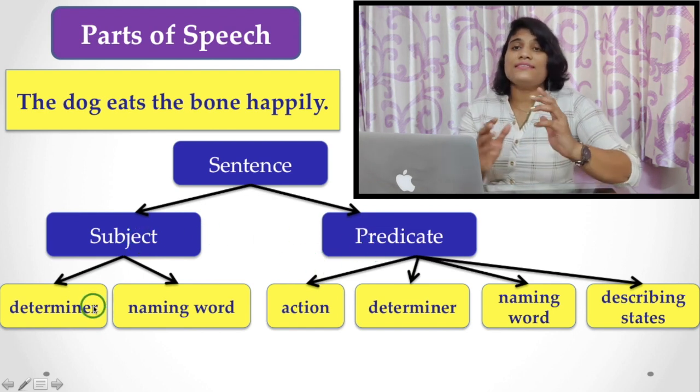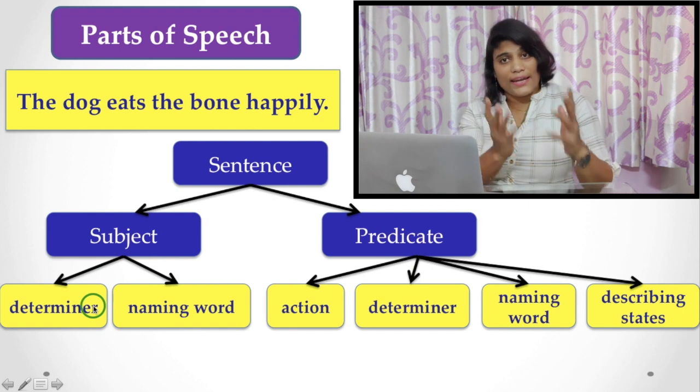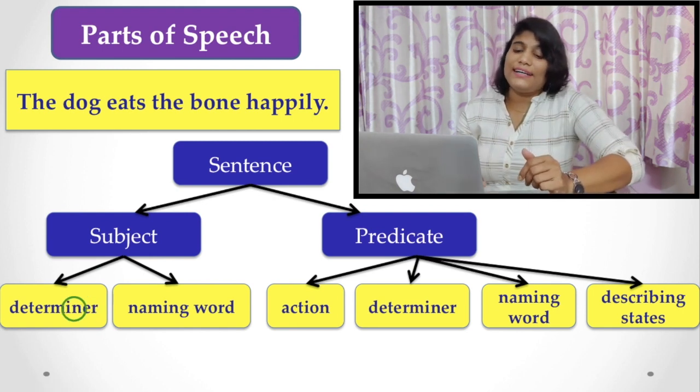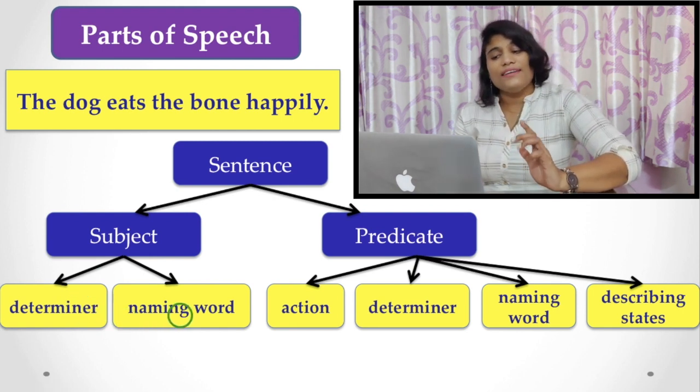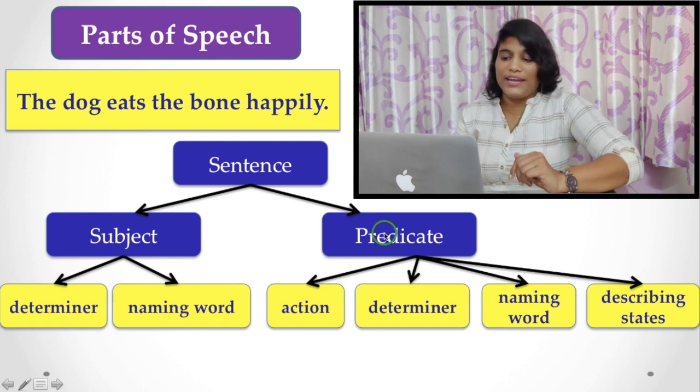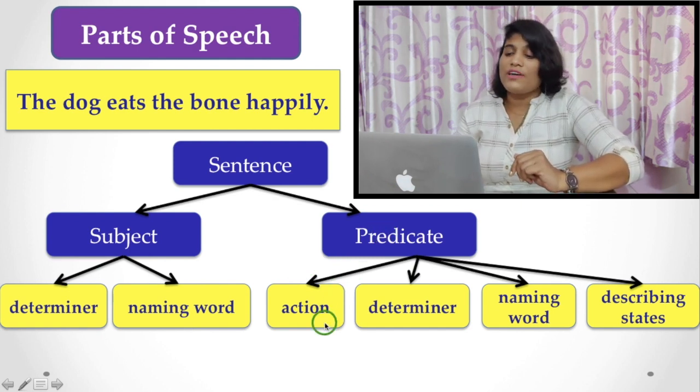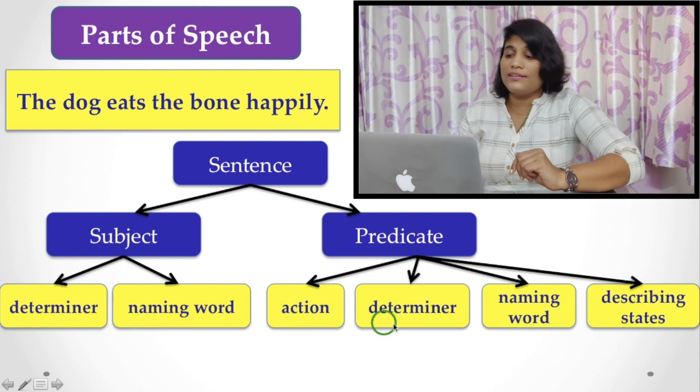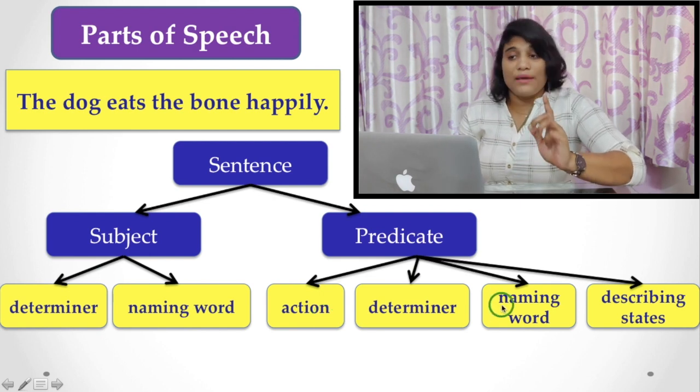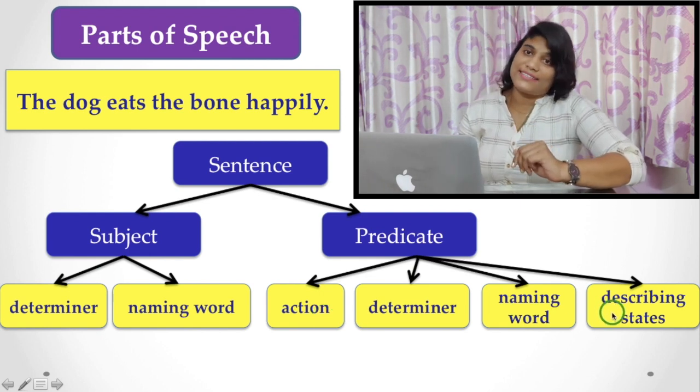Subject is made of two parts: determiner and naming words. And the predicate part consists of action word, determiner, naming word, and describing words.